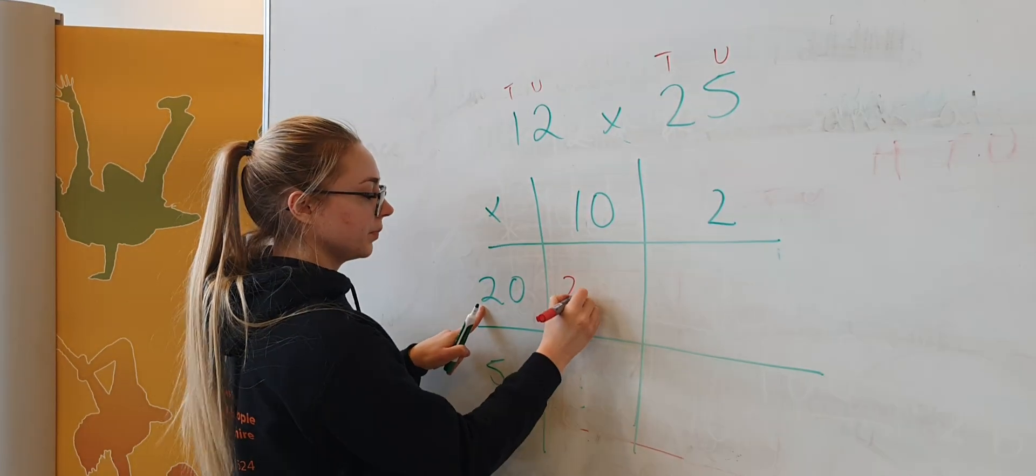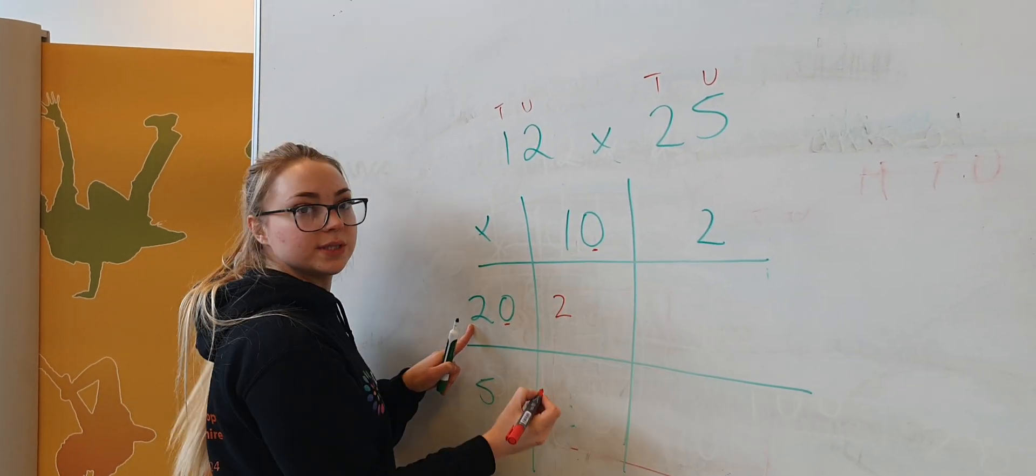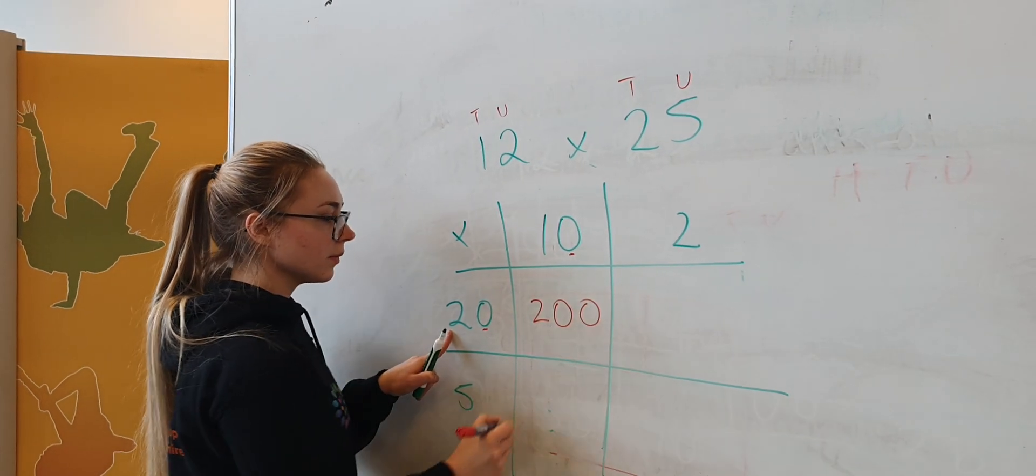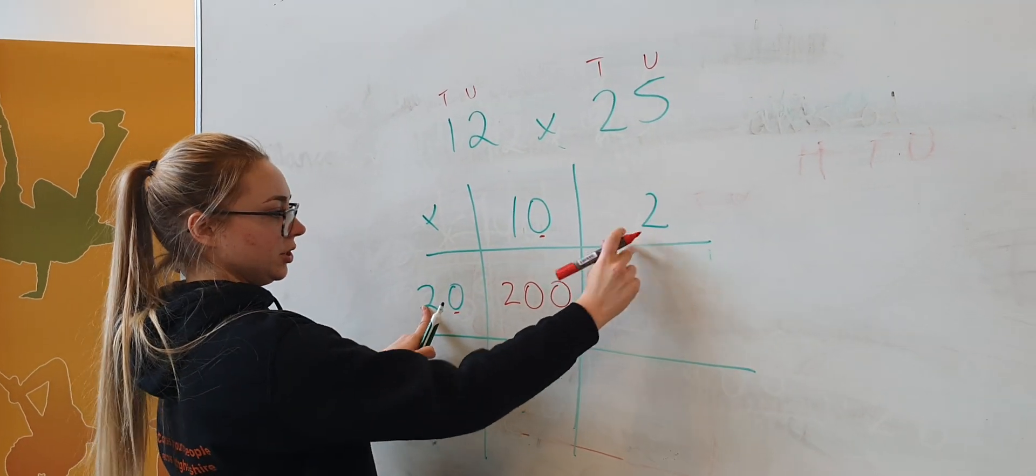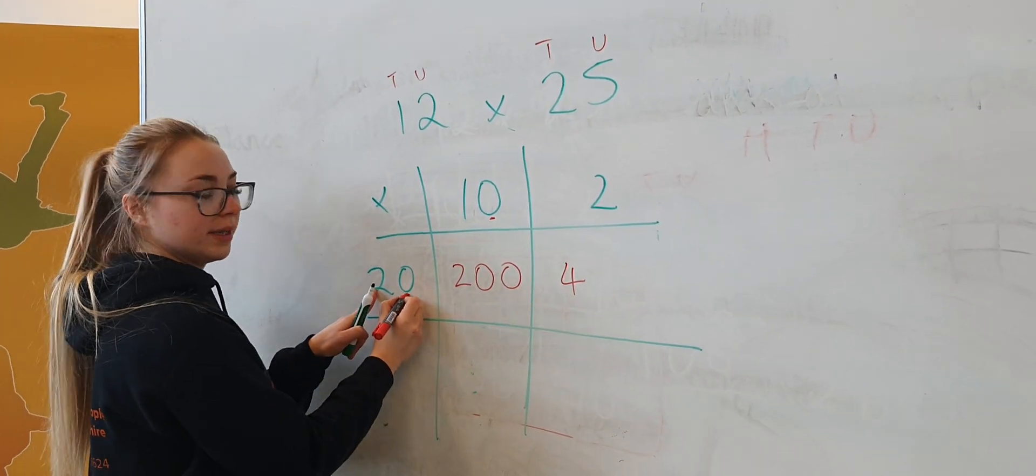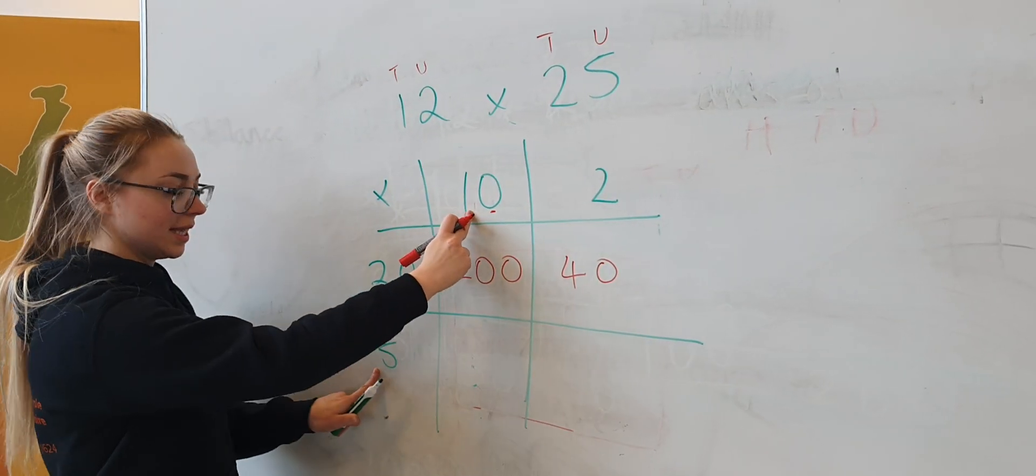Then I can do 2 times 2 is 4, and I notice that extra zero in there. Then I've got 10 times 5, I've got 50, and I've got 5 times 2 is 10.